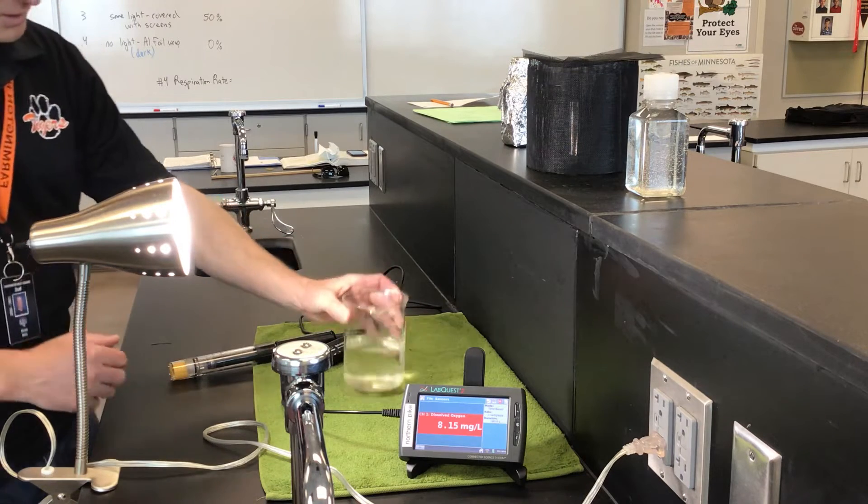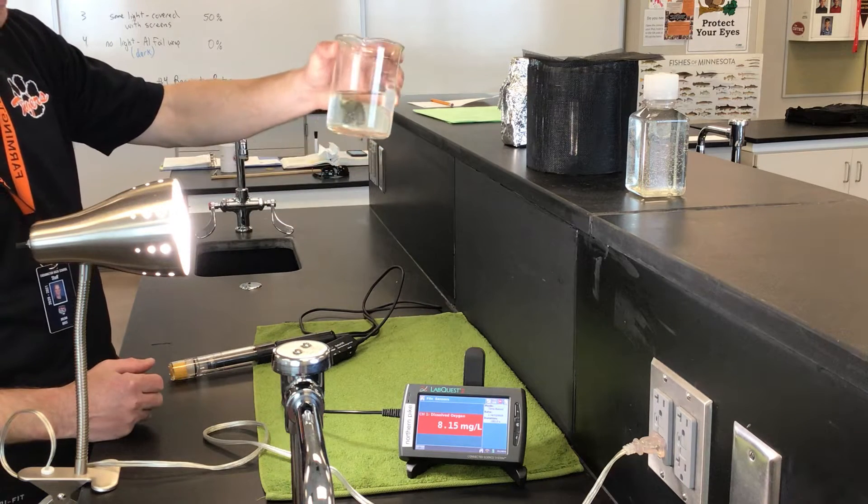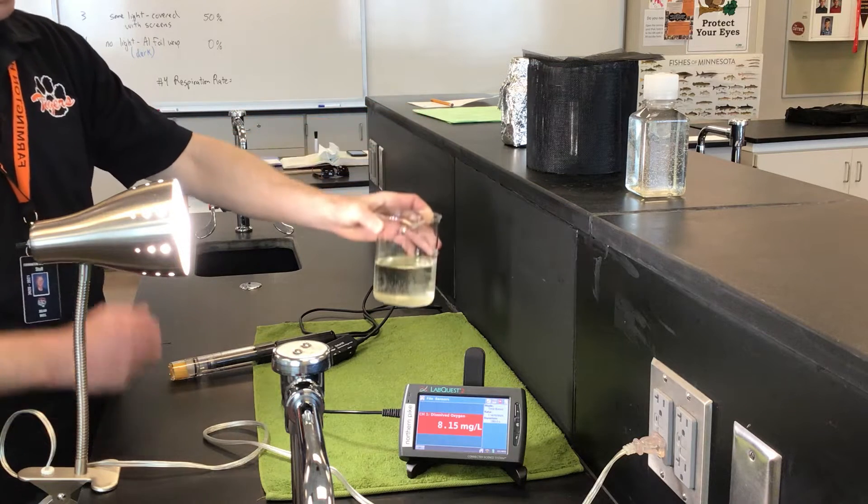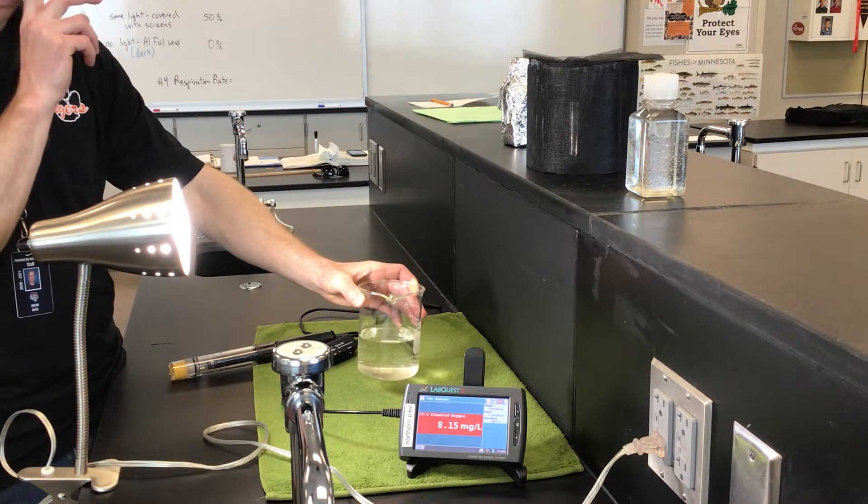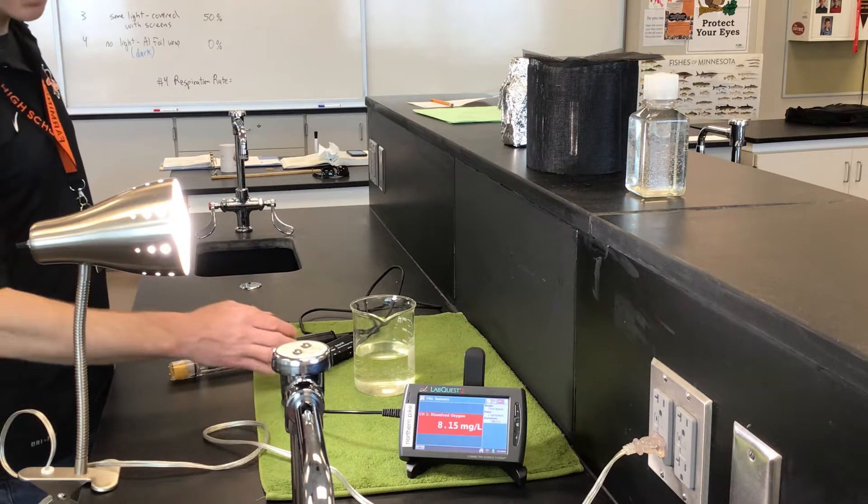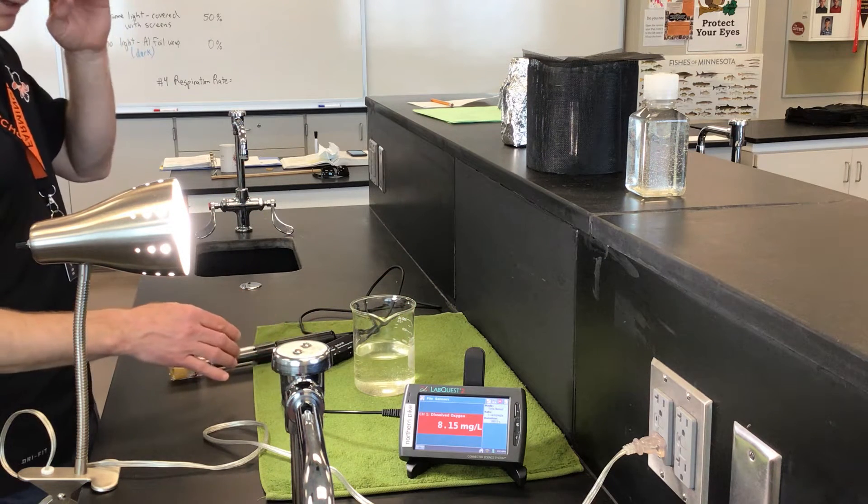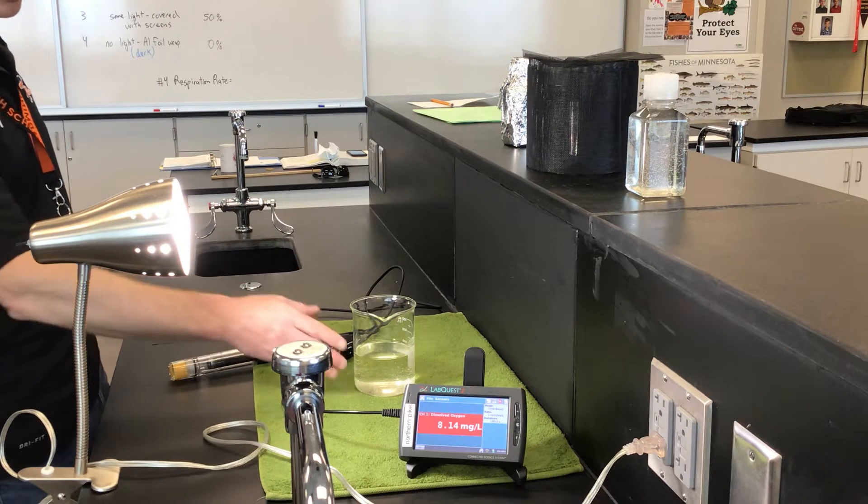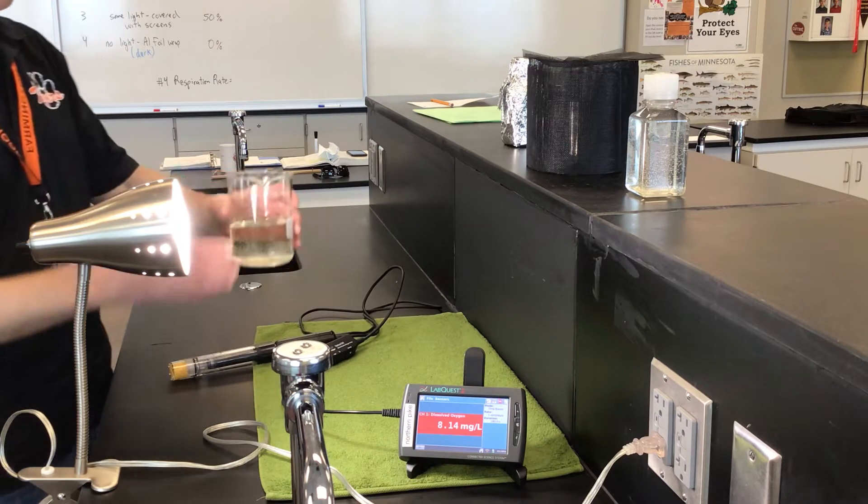But even though there's nothing that I can see in there, of course there are living organisms in pond water that are microscopic—little plankton, small microscopic single-celled algae and bacteria, possibly even protists like euglena, paramecium, or amoeba. So there are living organisms in pond water, we just